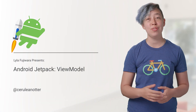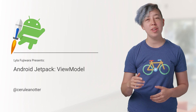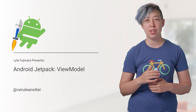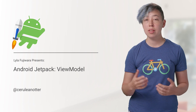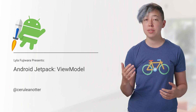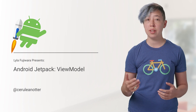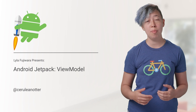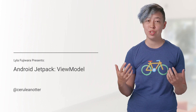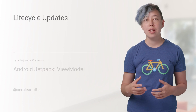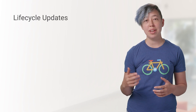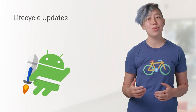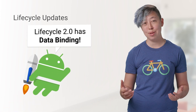At Google I/O 2017, we announced the Lifecycle Library — a set of libraries and guidance for avoiding memory leaks and solving common Android lifecycle challenges. Now, the Lifecycle Library has hit 2.0. It's part of Jetpack, and it includes new integrations with data binding.